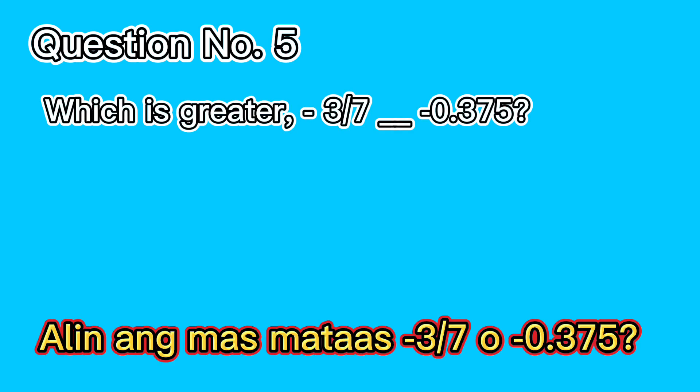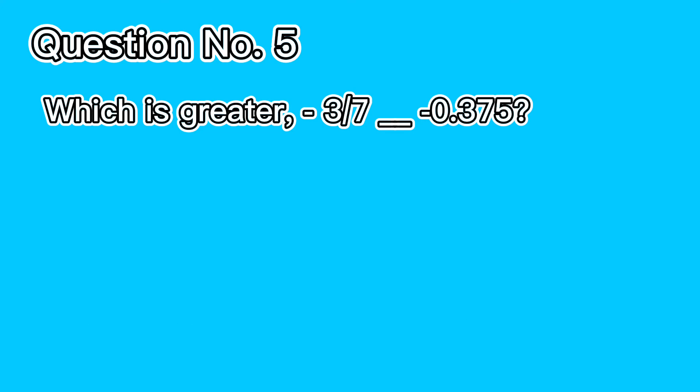Question number 5. Which is greater: negative 3 over 7, or negative 0.375? A. Negative 3 over 7 is less than negative 0.375.